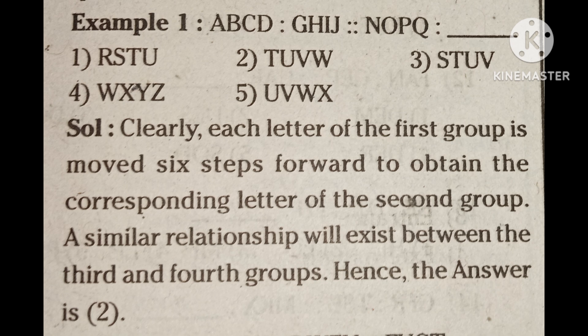Example 1: ABCD, GHIJ, NOPQ. Now find the fourth group. The options are: first RS, second TUVW, third HTUV, fourth WXYZ, fifth UVWX. Clearly, each letter of the first group is moved six steps forward to obtain the corresponding letter of the second group. A similar relationship will exist between the third and fourth groups. Hence, the answer is 2.